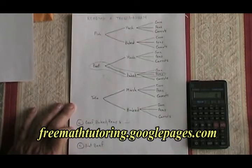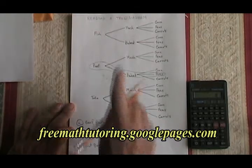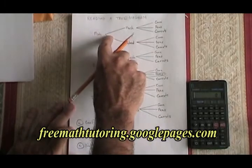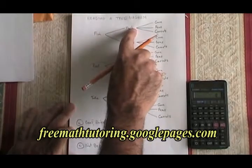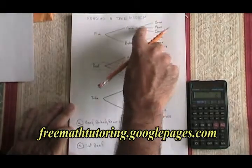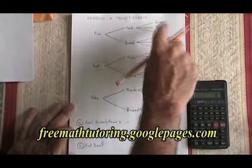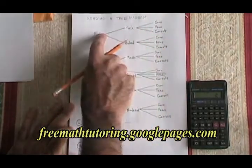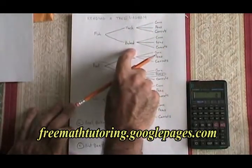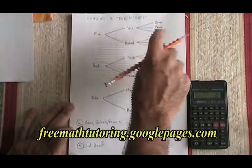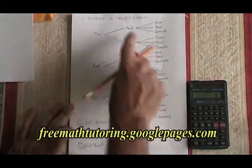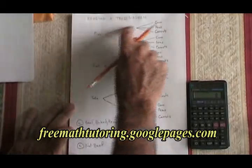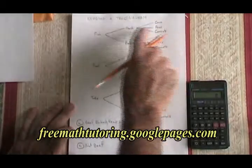How many combinations are there altogether? Well, fish and mashed potatoes gives three choices of vegetables. Fish and baked potatoes also gives three choices. We can see that there are actually six different choices that involve fish.